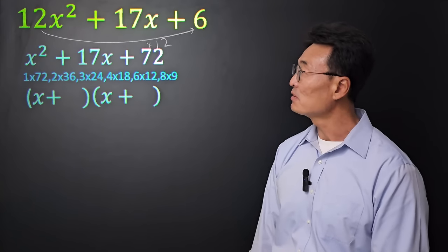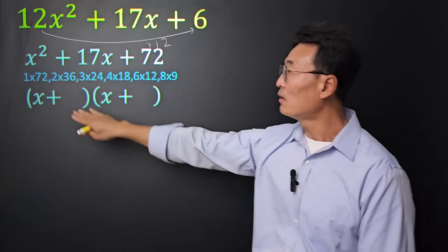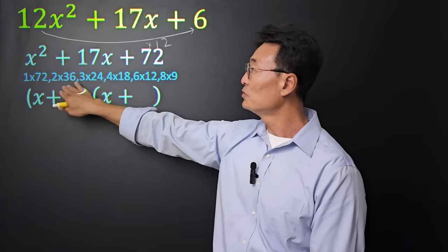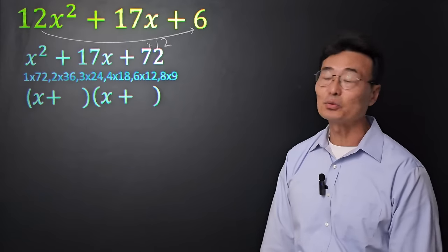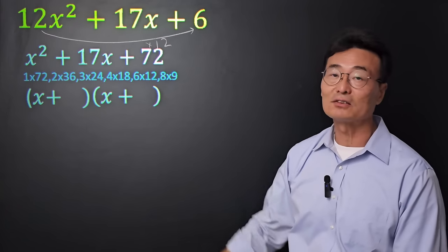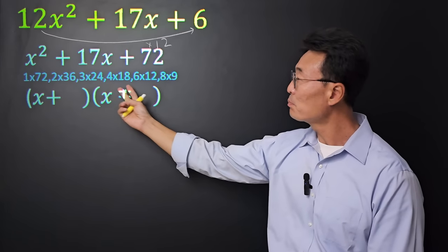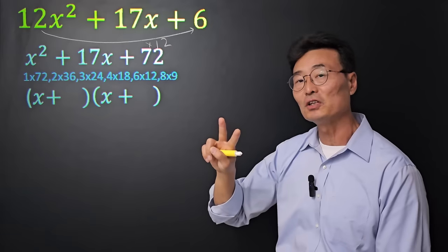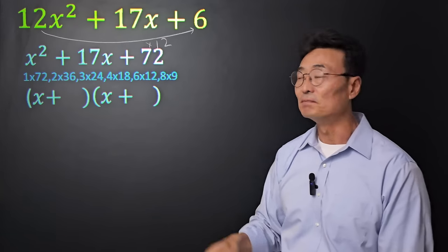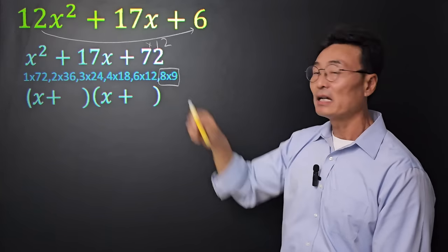First of all, the list of numbers that multiply to 72 are 1 and 72, 2 and 36, 3 and 24, 4 and 18, 6 and 12, and 8 and 9. Then, of these pairs of numbers that we have, what two numbers add up to 17? 8 and 9.